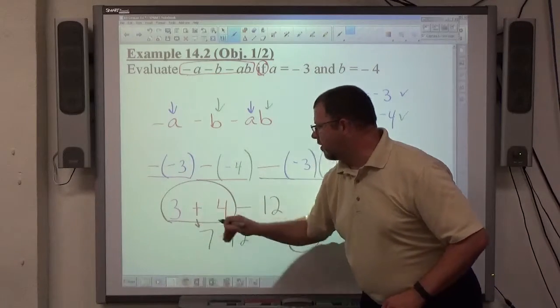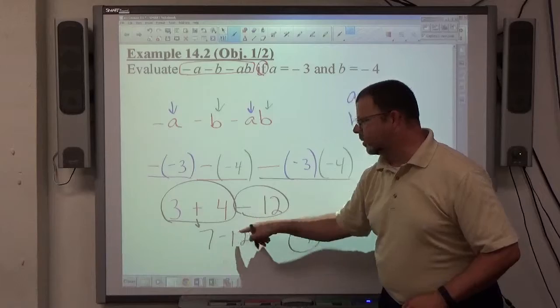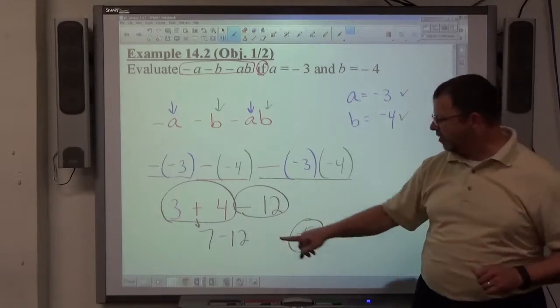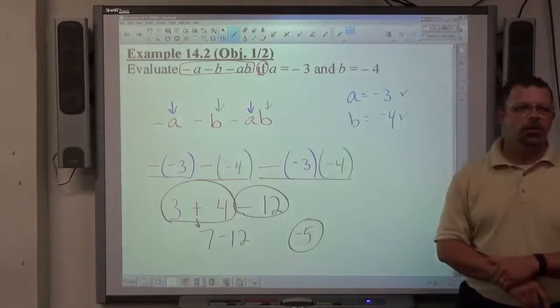Same sign, add and keep the sign the same. That's the only negative number. Once you get to opposite signs, subtract those values, and the answer is the same as the bigger number. 12 is bigger, it's negative, so the answer's negative.